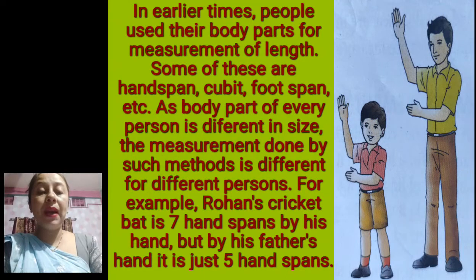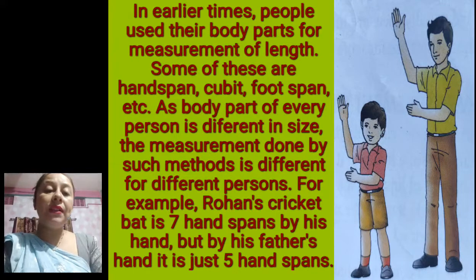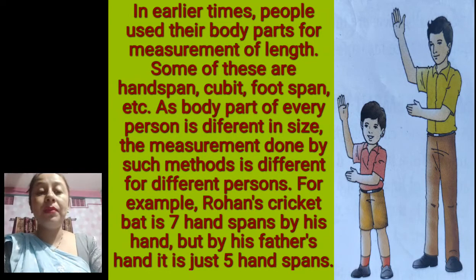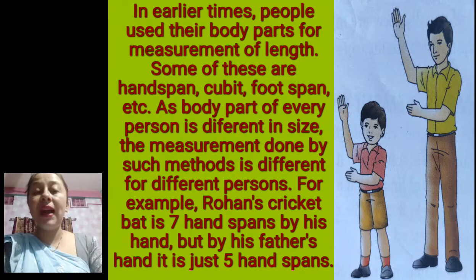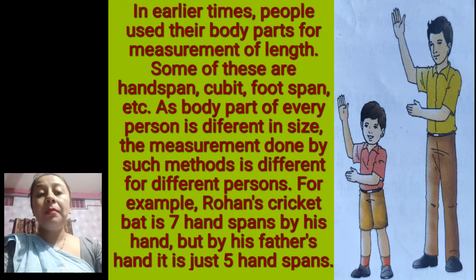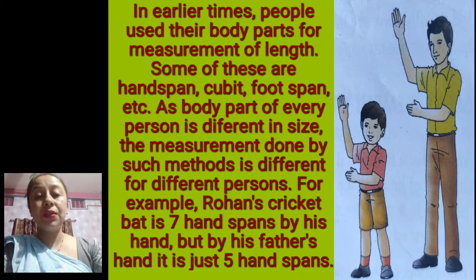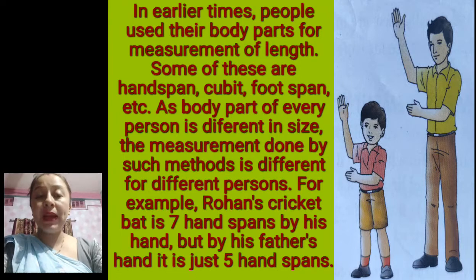Some of these body-part measurements are hand span, cubit, foot span, etc. As the body parts of every person are different in size, the measurement done by such methods is different for different persons. For example, Rohan's cricket bat is seven hand spans by his hand, but by his father's hand it is just five hand spans. In earlier times, where people didn't have standard units or measuring instruments, they used hand span, cubit, and foot span, but that was not accurate measurement because it differs from person to person.